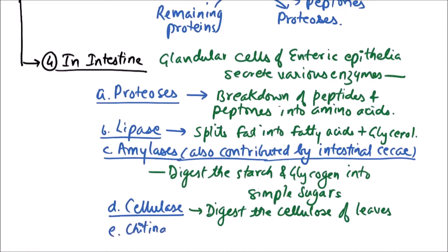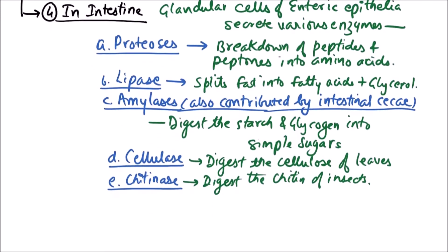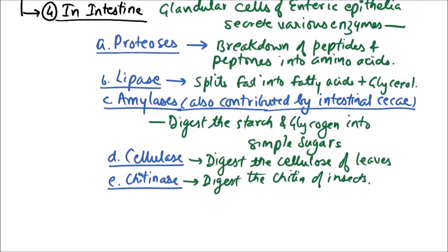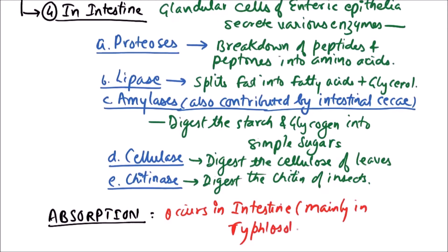Next enzyme is chitinase. Chitinase digests the chitin of insects. So these are the various enzymes present in the intestinal secretion. After digestion, absorption occurs in intestine and mainly in typhlosolar region.